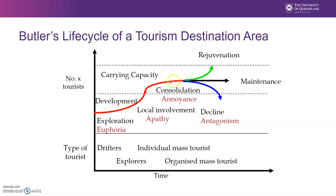Alternatively, the destination realizes they've got too many people and needs to figure out what to do to keep everybody happy — tourists, locals, everyone — and so they work towards what we call rejuvenation. They may put new policies in place, extend the area of the destination, or do more renovations to make sure everybody is comfortable. This is really what we need to be thinking about with regard to destination development.